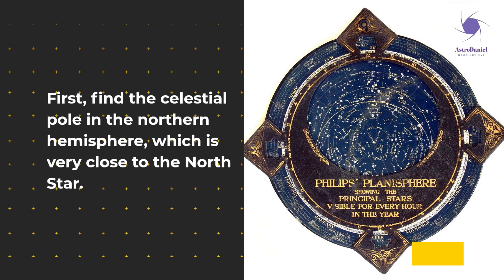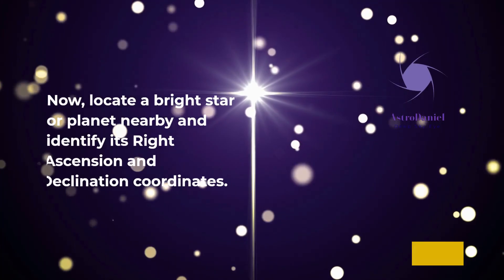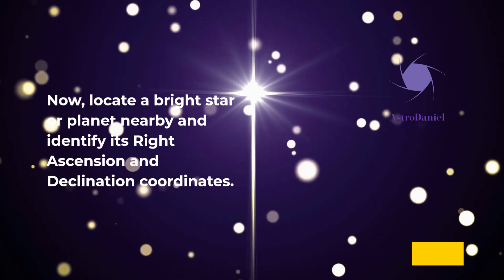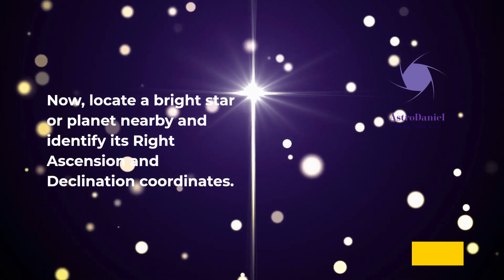First, find the celestial pole in the northern hemisphere, which is very close to the North Star. Now, locate a bright star or planet nearby and identify its right ascension and declination coordinates.